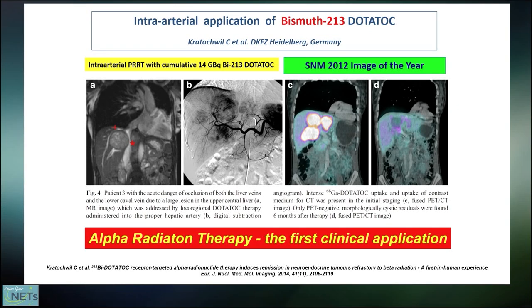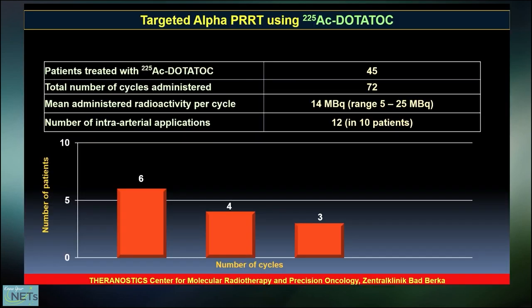The first treatment of neuroendocrine tumors with an alpha emitter was done in Heidelberg, Germany, at the German Cancer Research Center by the group of Kratochwil and colleagues. They used Bismuth-213, which is a decay product of Actinium-225. This was the image of the year already 10 years ago in 2012 at the SNM meeting. You see that liver metastases in this patient, not even responding to Yttrium-90, disappeared completely after intra-arterial use of Bismuth-212 DOTA-TOC.